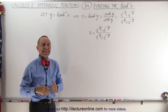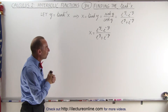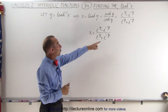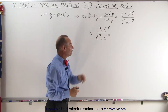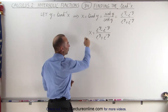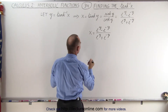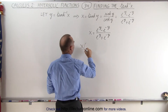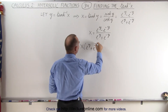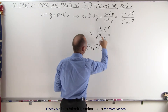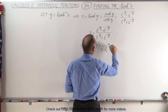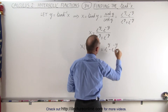To find the inverse hyperbolic tangent of x, we want to solve this equation for y. So what we're going to do first is cross-multiply. We write this as x times the quantity e to the y plus e to the negative y, set equal to the numerator, which is e to the y minus e to the negative y.